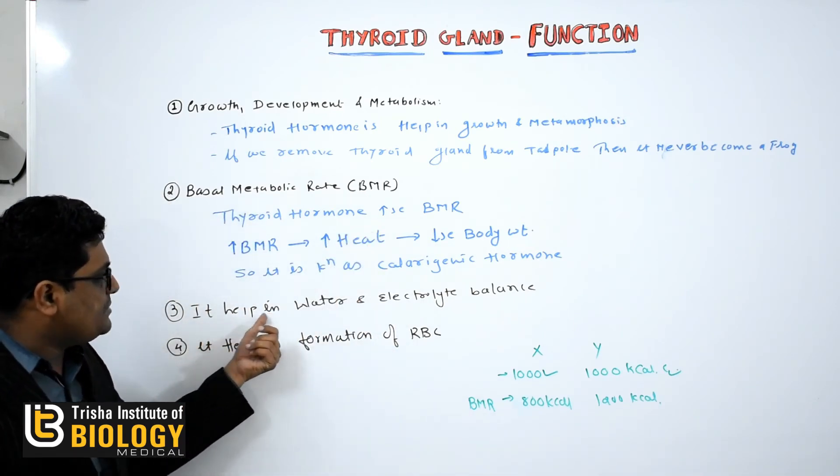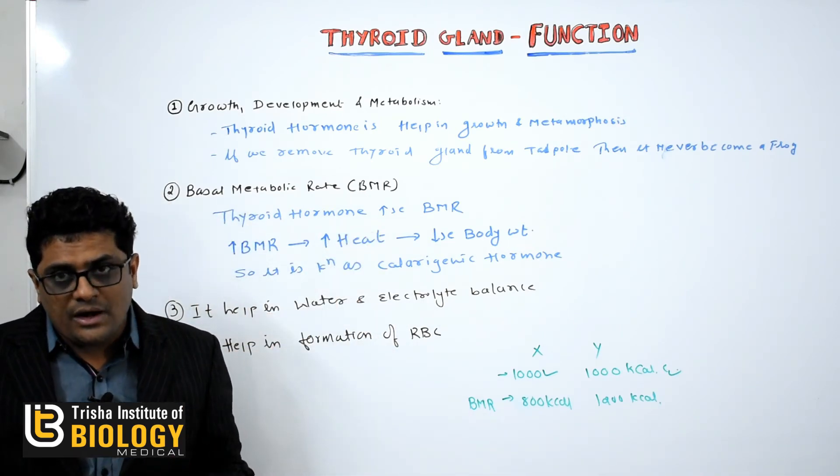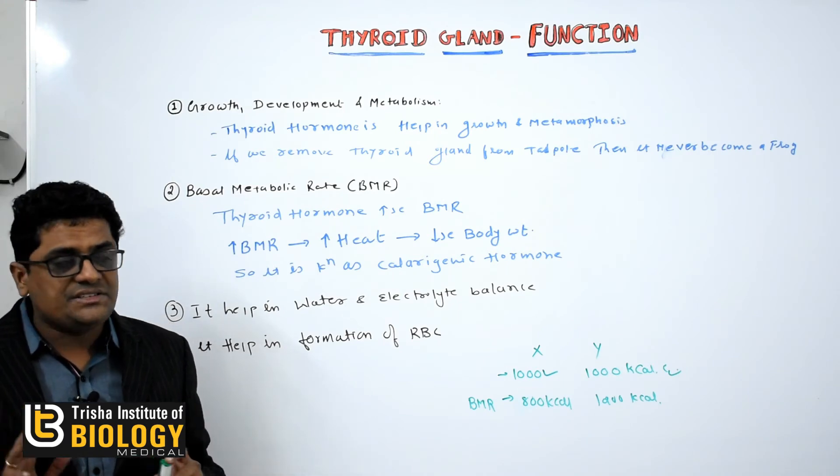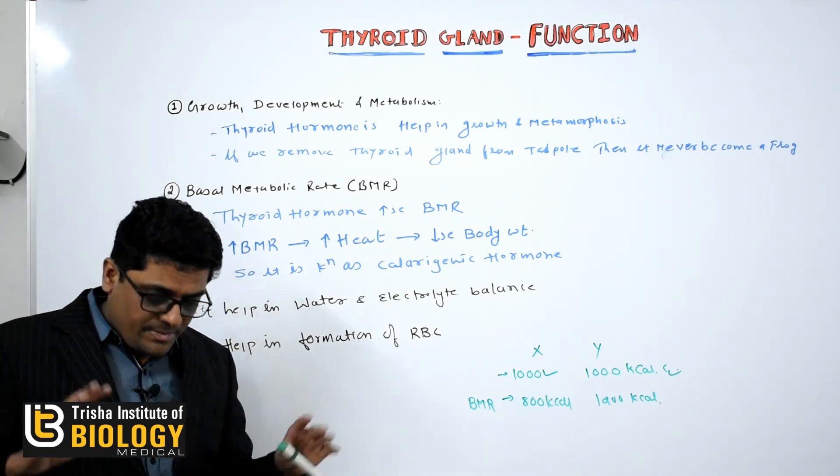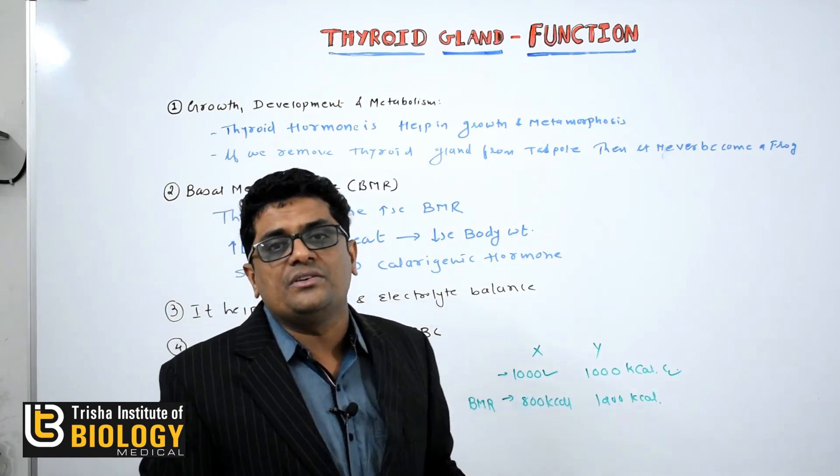Also, the thyroid hormone is responsible for the water and electrolyte balance in our body and last, it is helping the production of RBC. So mainly, there are four different types of functions of the thyroid gland.